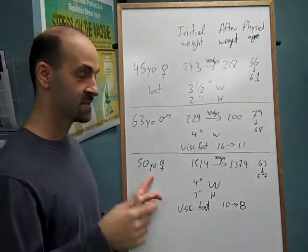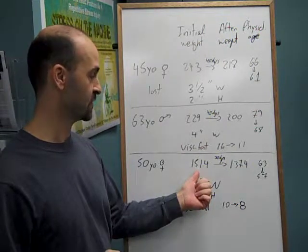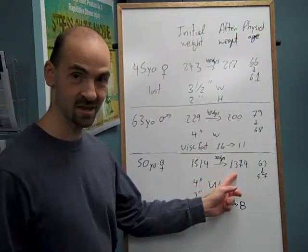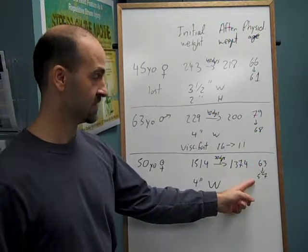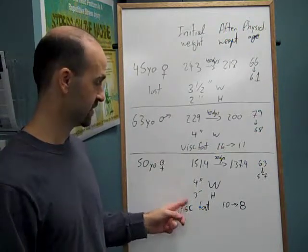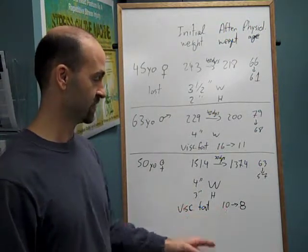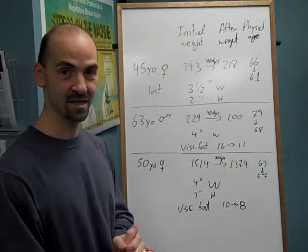A 50-year-old female, not finished the program yet, she's about 30 days into it. Started at 151.4, she's down to 137 pounds right now. Physiological age was 63, it's already down to 57, which is great. She's lost already four inches off her waist, about three inches off her hips, and her visceral fat went from 10, and she's already down below what we'd like to see, she's in the 8 range.